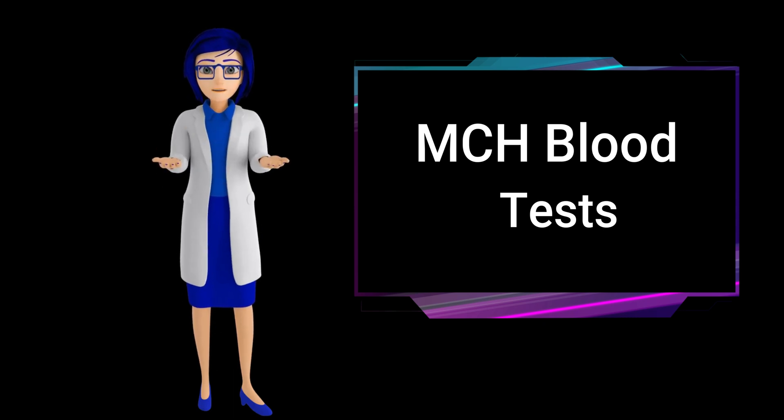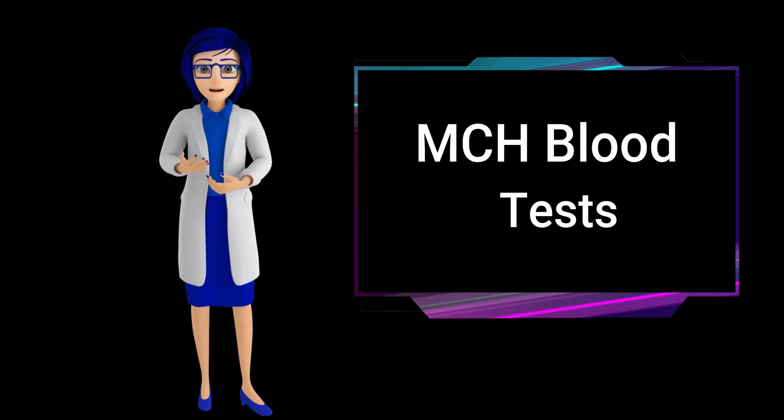Thalassemia is a group of genetic disorders that affect the production of hemoglobin.